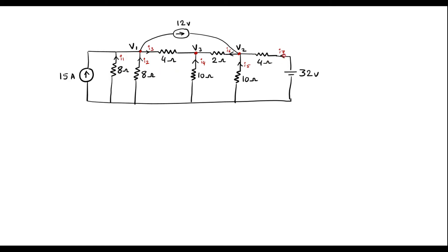Here I1 to I7 are branch currents. In node analysis we should apply Kirchhoff's current law to each non-reference node. Here V1, V2, V3 are non-reference nodes and this is the reference node. Voltage at this reference node is 0V.